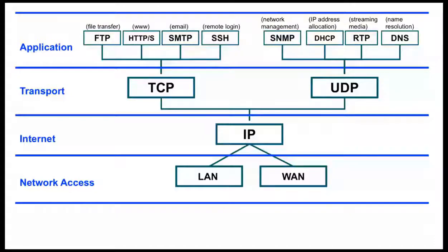The TCP/IP model organizes protocols into four different layers: network access, internet, transport, and application.